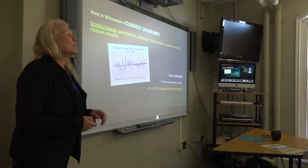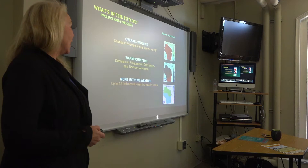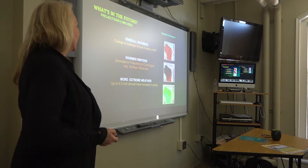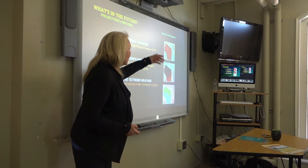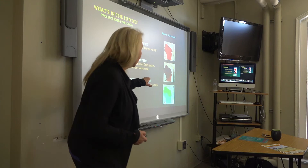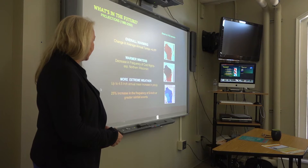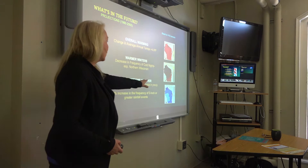Looking at projections — what might we expect? These are from vetted sources, using a middle-of-the-road A1B scenario, being conservative. We're looking at overall warming, with a lot of it in northwestern Wisconsin. Warmer winters — warming by almost 20-some degrees in the wintertime — and more extreme weather. More precipitation increases overall, but more extreme weather, particularly in northwestern Wisconsin: those big gusher rain events. And what did we see with our flooding that I showed you pictures of? We're seeing place-based evidence of exactly that.